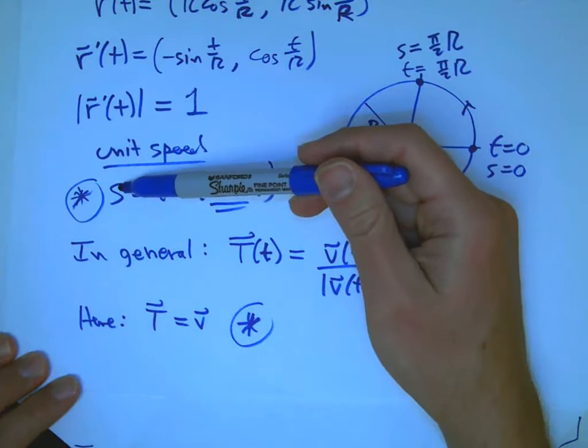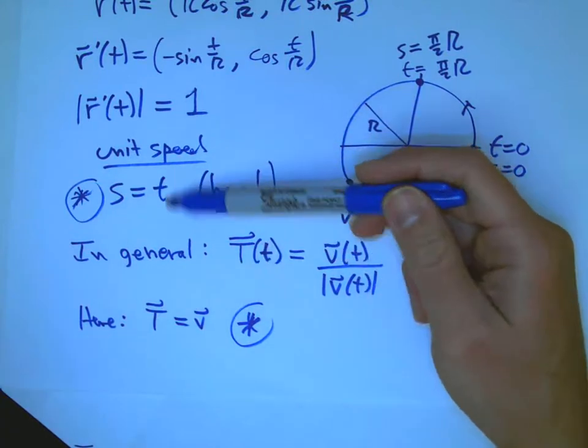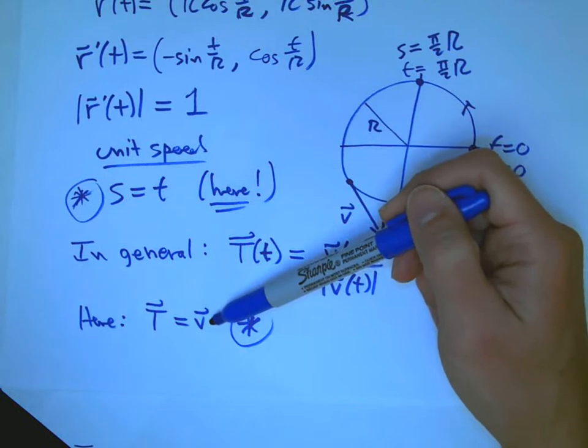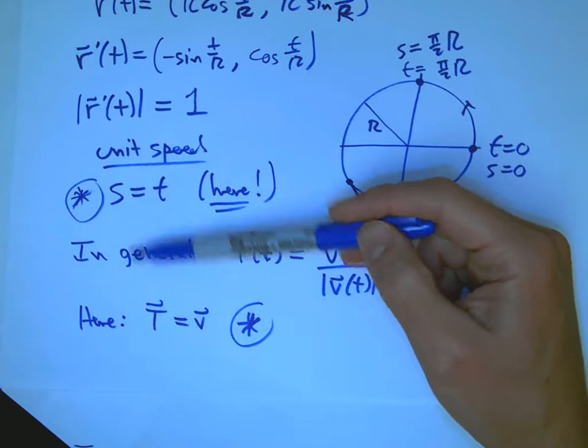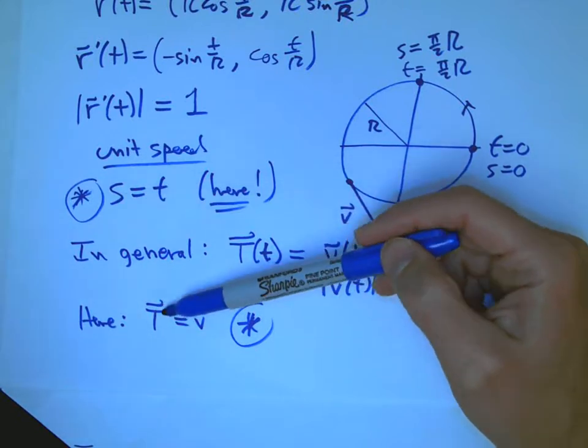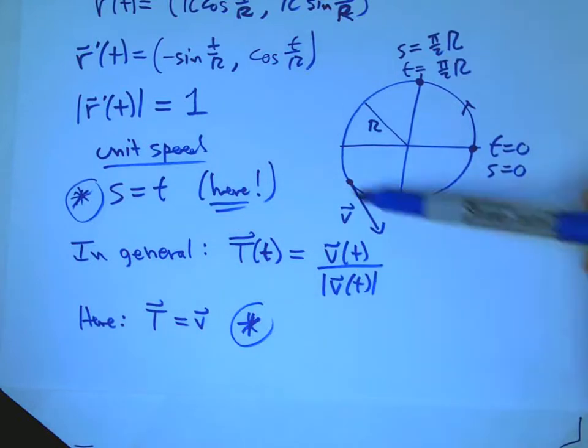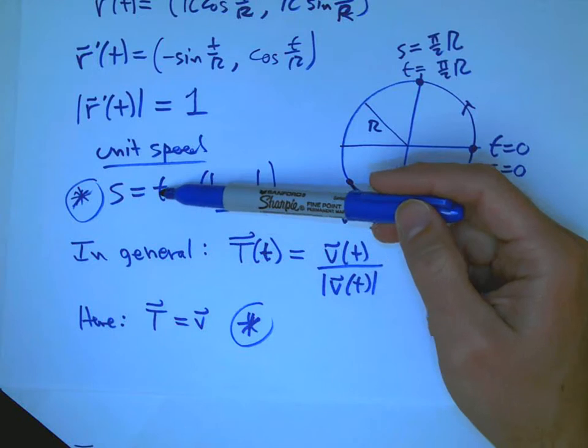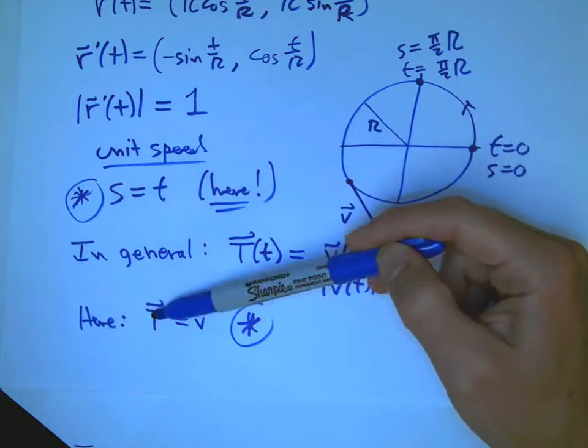So what we're going to see later is that we really care about s and capital T, but what's easier to calculate with is t, is little t and v. And so we're going to have definitions in terms of these geometric quantities. These two guys are purely geometric. They have meaning independent of the parametrization, independent of how you walk along the curve. They only depend on what the set of points is and not the labels and everything.